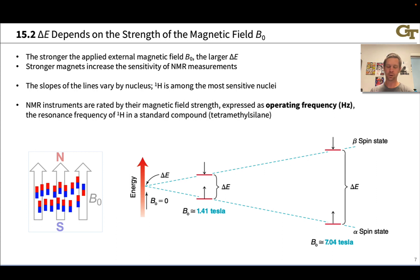For our purposes, the key conceptual point is just the stronger the applied magnetic field, that's B₀ in our lingo so far, the larger is this energy gap between the alpha and beta spin states. This makes it easier to measure. The sensitivity of a nucleus to a change in B₀ varies by nucleus, and lucky for us, the proton is among the most sensitive nuclei, so it's relatively easy to collect proton NMR spectra.